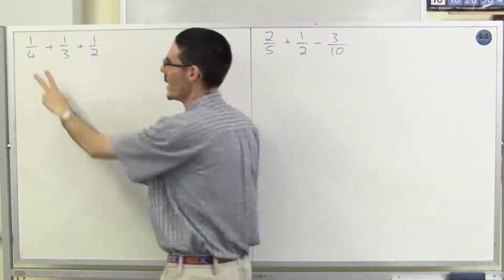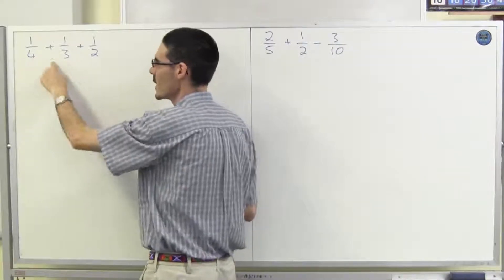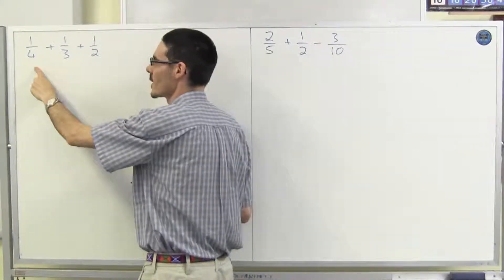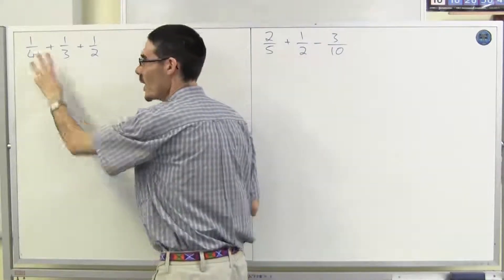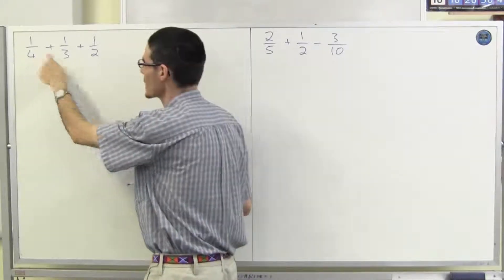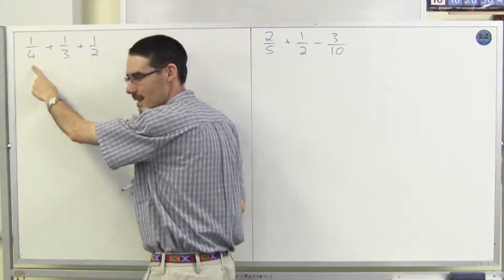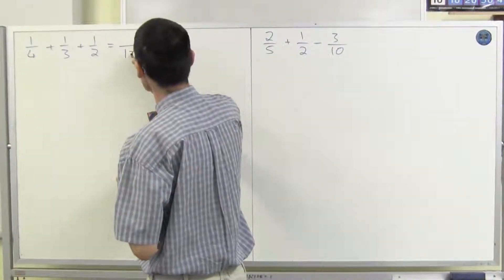Let's try 8, next multiple of the biggest number. Does 8 work? 3 doesn't go into 8 even though 2 does. Okay, next multiple, 12. Does 3 go into 12? Yes, it does, 4 times. Does 2 go into 12? Yes, it does, 6 times. So let's use 12.